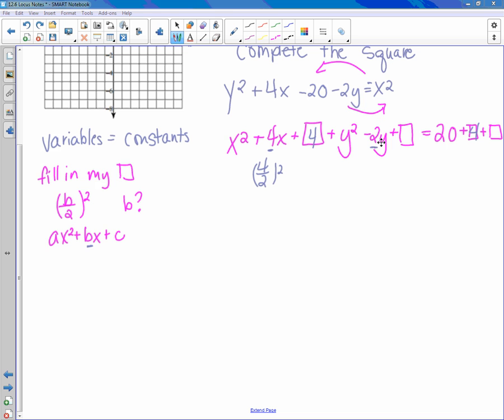Now I'm going to go to this one. Negative 2 divided by 2 squared—so negative 2 divided by 2 is negative 1, and negative 1 squared is 1. And since I put 1 here, I have to go over here and say 1. So now I'm just going to rewrite what I have. Now I have x² + 4x + 4 + y² - 2y + 1 equals 20 + 4 is 24 + 1 is 25.